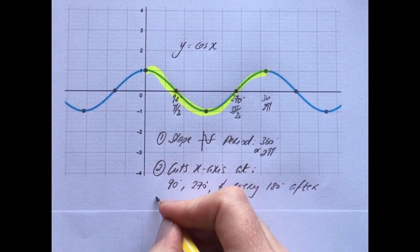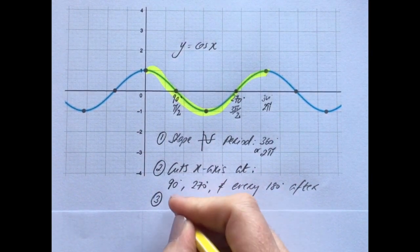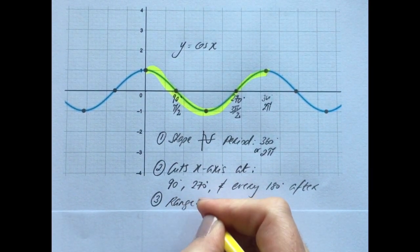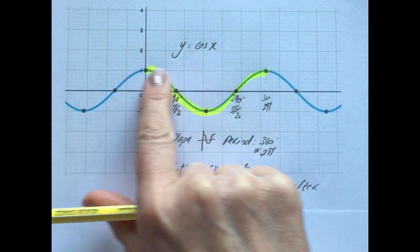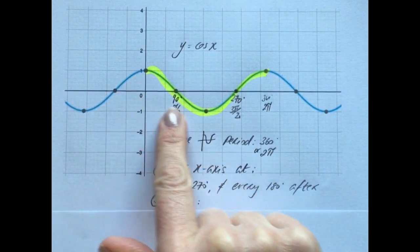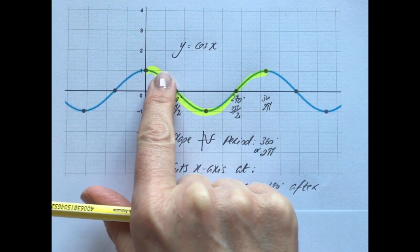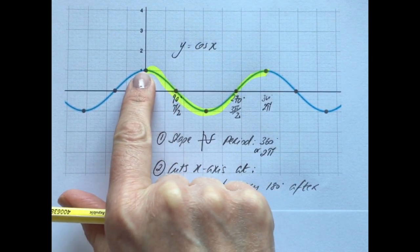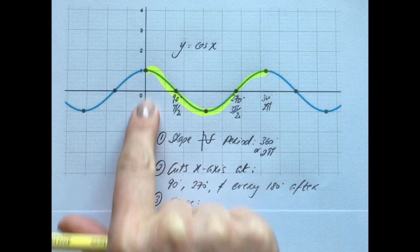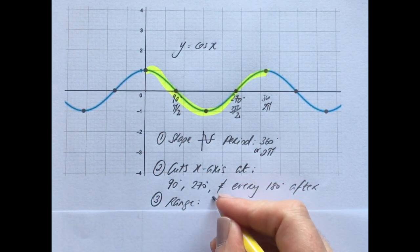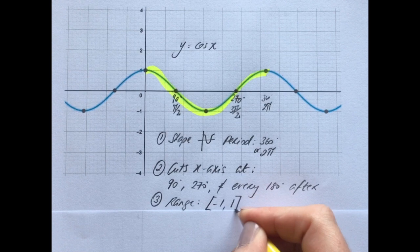The third and final point for the cos x curve is the range — how high it goes on the y-axis and how low it goes down. The highest point is 1 and the lowest point is minus 1, exactly the same as the sine curve. So the range is minus 1 to 1.